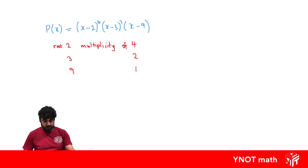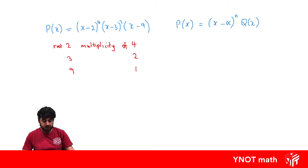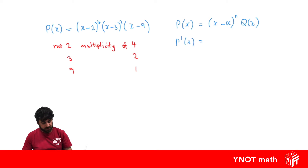Let's generalize this a little bit. Say we have some polynomial p(x) in the form (x−α)^n · q(x), where α is a root to some power n and q(x) is the rest of the polynomial. If we differentiate this, we have to use the product rule because both terms are in terms of x.